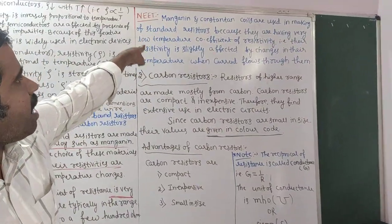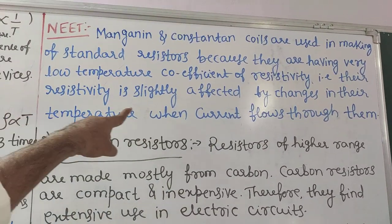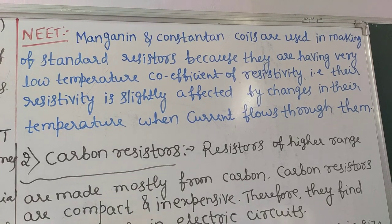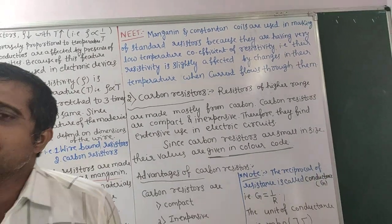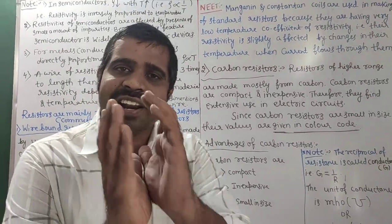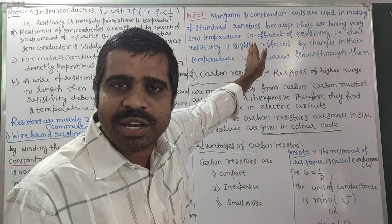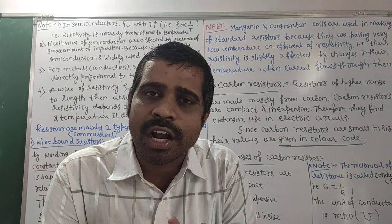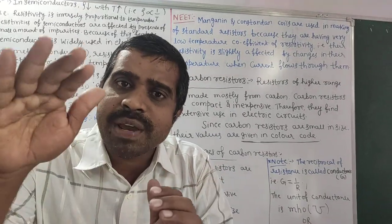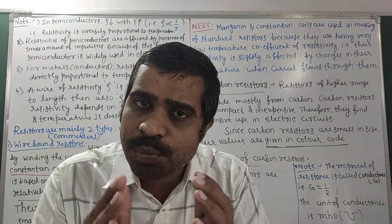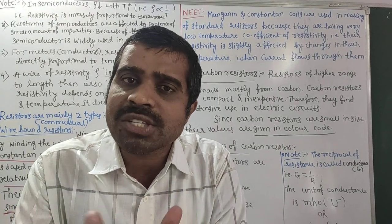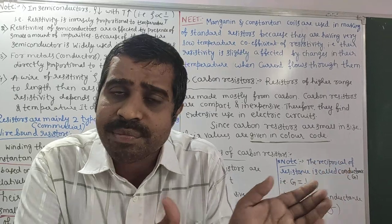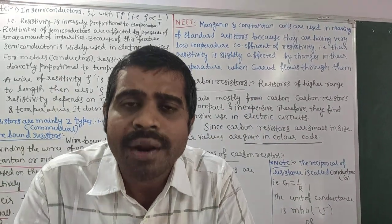Manganine and constantan coils are used in making standard resistors because they have a very low temperature coefficient of resistivity — their resistivity is only slightly affected by changes in temperature when current flows through them. This is why manganine, constantan, and nichrome are selected for making standard resistance boxes in physics labs.